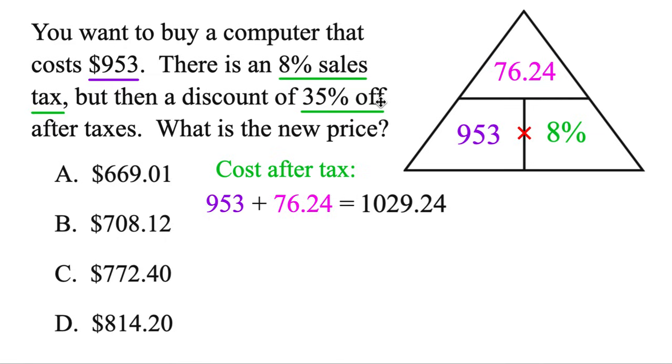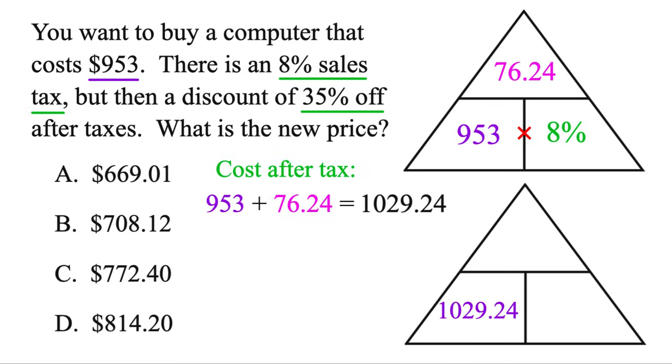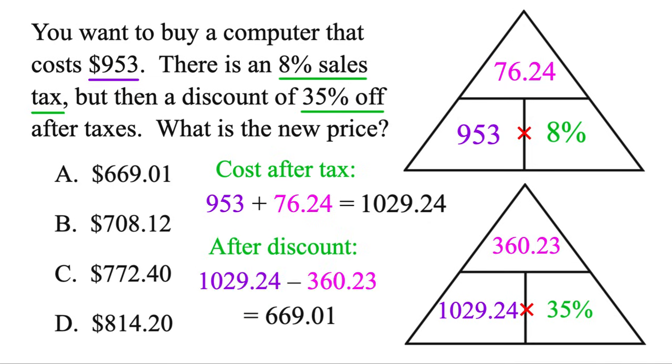But now we're going to use the 35% off. So let's draw our second triangle. However, when you calculate a new total, that's going to become the new whole in the second triangle. And then let's do the 35%, we'll multiply those two, and that'll give $360.23. But we know that's a discount, so finally, subtract that out. And that'll give a final cost, $669.01. So now we have a $600 device to play solitaire.